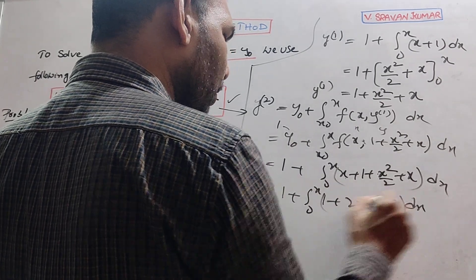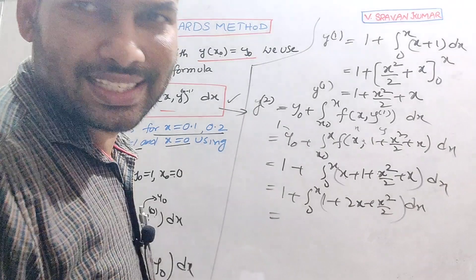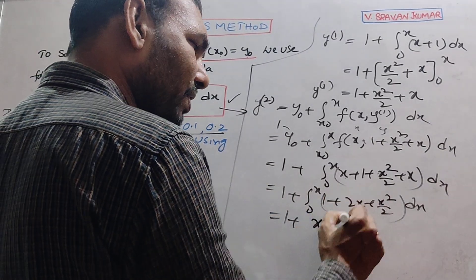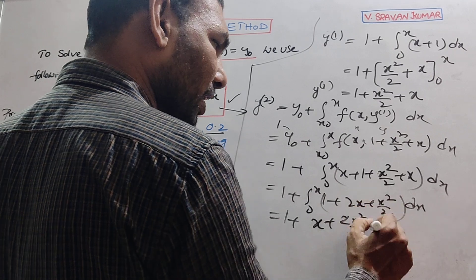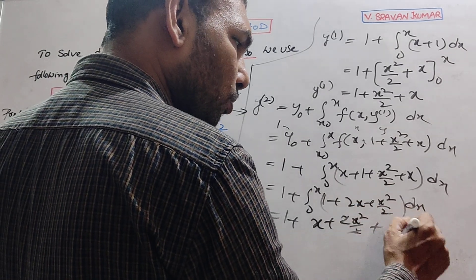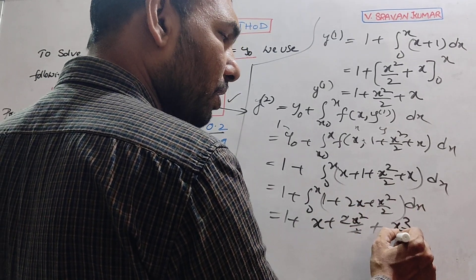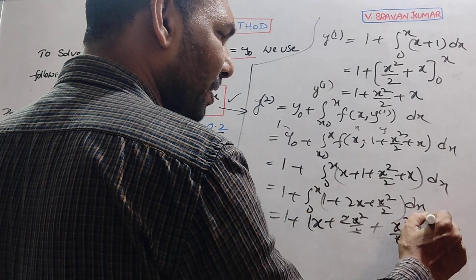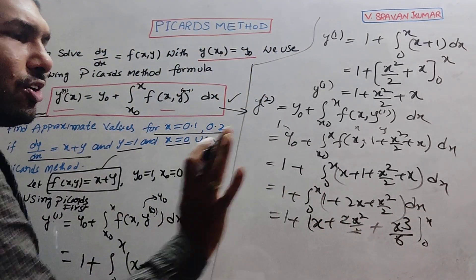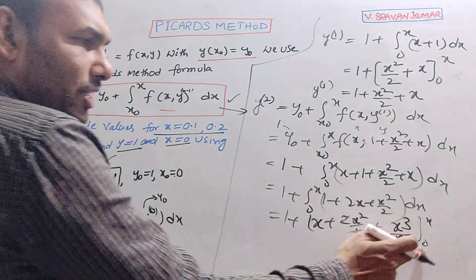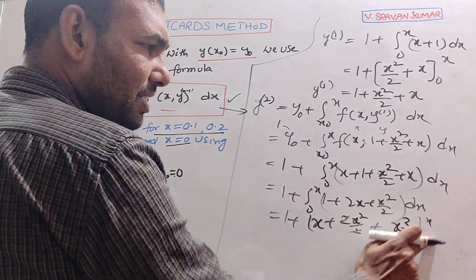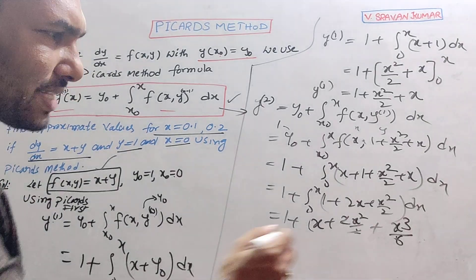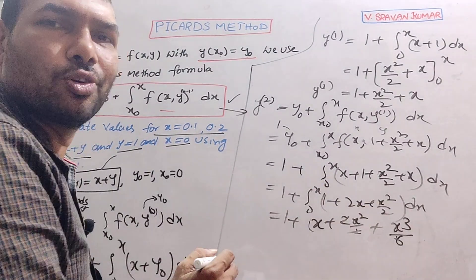So now integrate. 1 plus integral 1 dx is x, integral x is x²/2 (2 cancels out), integral x² is x³/3, denominator 2 times 3 equals 6. Limits substitute, x equal to x upper limit. So y² = 1 + x + x²/2 + x³/6.